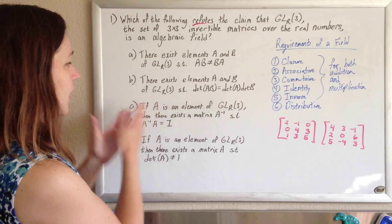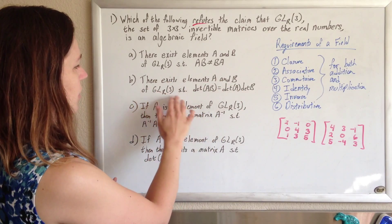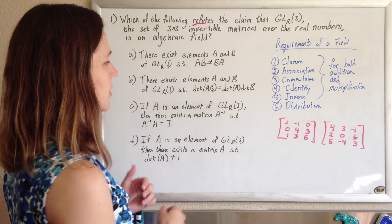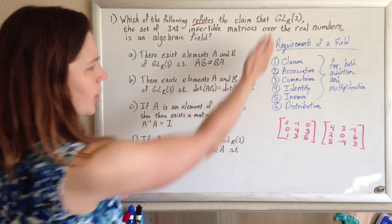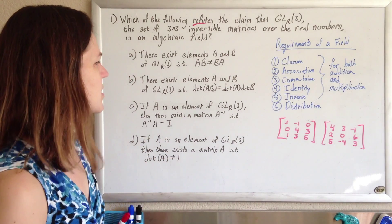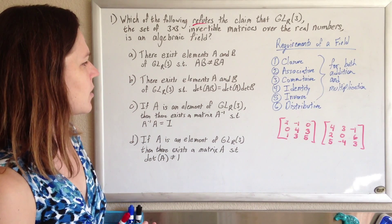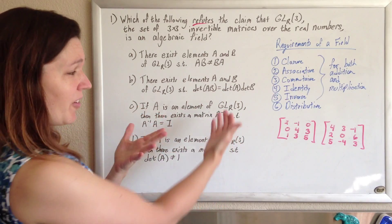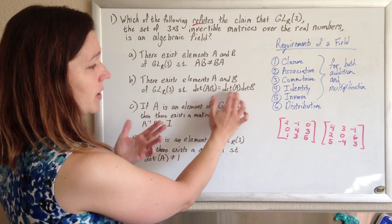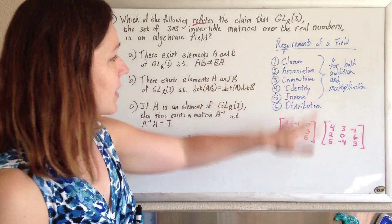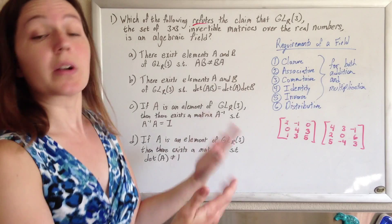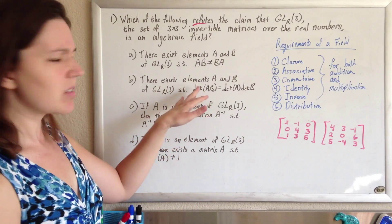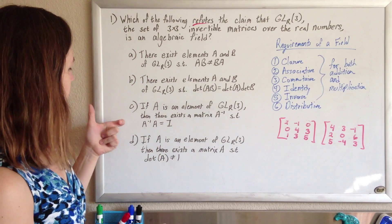We go to part B: there exist elements A and B of GL3 such that the determinant of AB equals the determinant of A times the determinant of B. We look at our requirements of the field and we don't see anything about determinants there. Determinant of AB equaling determinant of A times determinant of B seems like it would support being a field, if anything. So this one looks a little fishy. We're still liking answer A.